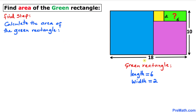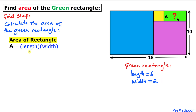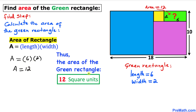Here's our final step: let's calculate the area of this green rectangle whose length is 6 and width is 2. Area equals 6 times 2, which is 12 square units. So the area of this green rectangle is 12 square units — that's our final answer. Thanks for watching, and please don't forget to subscribe to my channel for more exciting videos.